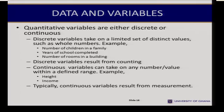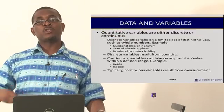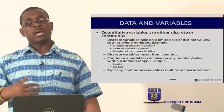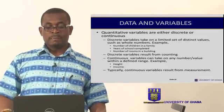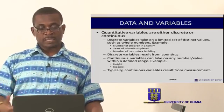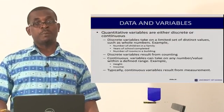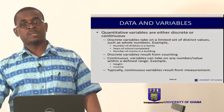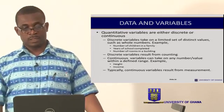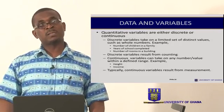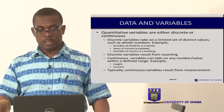Quantitative variables are either discrete or continuous. Discrete variables are variables that can assume countably finite or countably infinite values. They assume distinct values such as whole numbers. For example, the number of children in a family: zero, one, two, three, etc. The number of years of school completed — perhaps six years for primary one to six, or nine years for primary one to JHS three. The number of rooms in a building. So they are countably finite, and in some circumstances countably infinite.